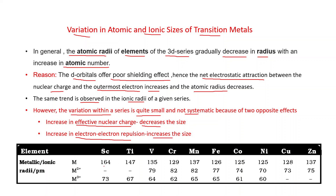You can see the atomic radii of the 3d transition series generally decrease, but some exceptions are also there. There is a slight increase at some points. When size decreases, effective nuclear charge is dominant. When size increases, electron-electron repulsion is dominant. In the middle, the atomic radius is almost constant, meaning both opposite effects balance each other.